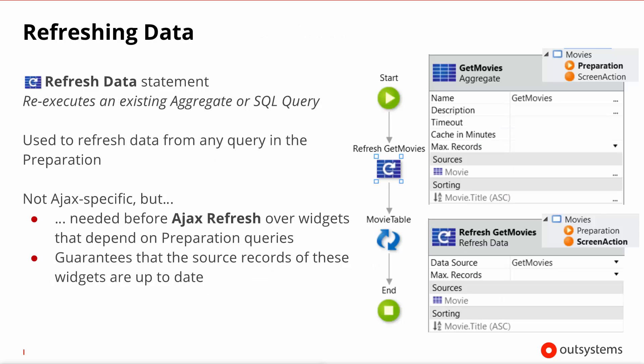Now, refreshing a widget might not be enough if the underlying data that feeds the widget hasn't been changed — you might not see anything happening. Because of this, that's why you have the refresh data statement. This will re-execute an aggregate that you have defined in the preparation of the current screen, and you normally couple this with the Ajax refresh statement afterwards.